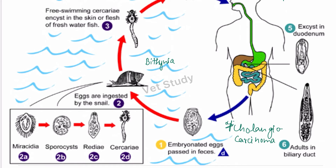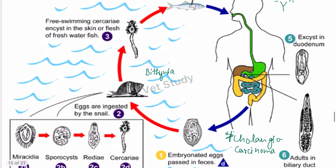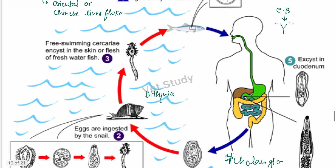For treatment, drugs like hexachlorophene and praziquantel are effective against this parasite. For control, snail control is the key measure, as is the case with Fasciola and Dicrocoelium. Controlling the snail intermediate host is applicable across all these parasites.